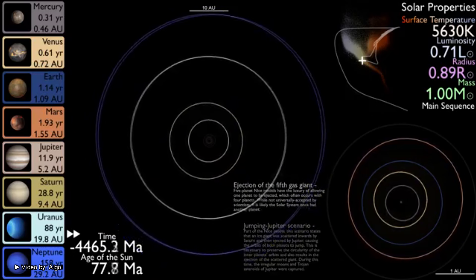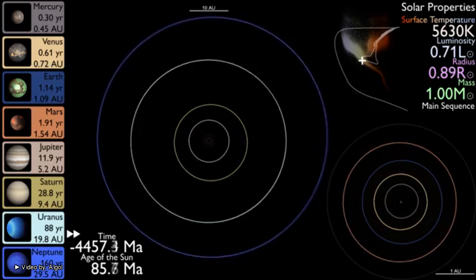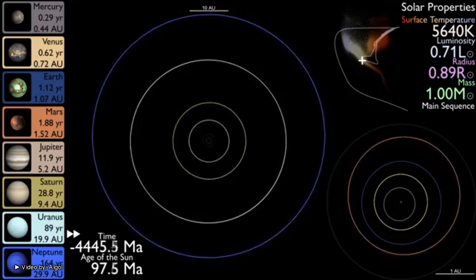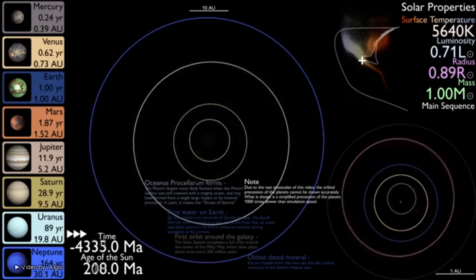After the planet is kicked out of our solar system, the orbits of Jupiter, Saturn, Uranus and Neptune re-stabilize into their current positions.